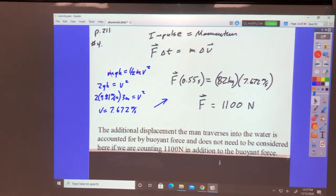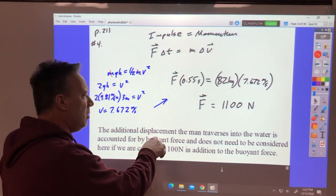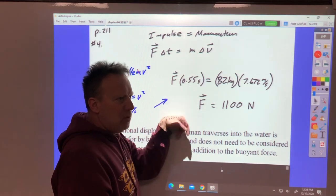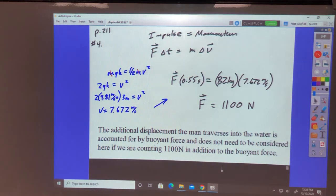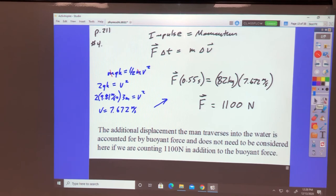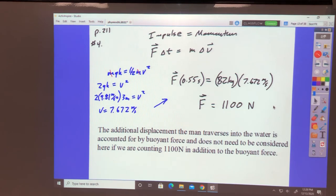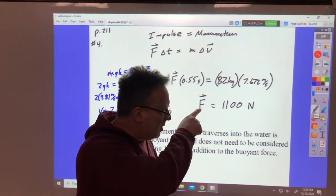Now what about underneath that water and all that? Well, the additional displacement the man travels in the water is accounted for by the buoyant force, so we don't have to pay attention to that here if we're just counting this force in addition to whatever buoyant force there is. It comes out to be 1,100 newtons upward. I'll just leave that positive when we don't need to worry about saying upward, though I guess we do because it is a vector. However, he is falling, so we can assume he's not falling sideways. So I think that's good.